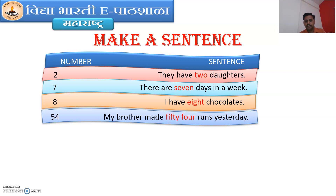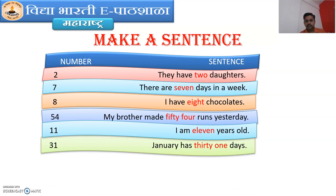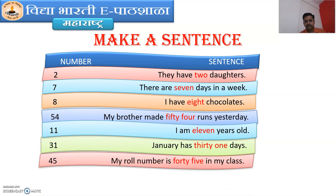We have already learned this sentence. Number 11 — I am 11 years old. Good. Number 31 — January has 31 days. Number 45 — my roll number is 45 in my class.